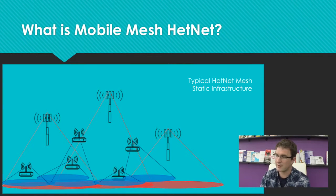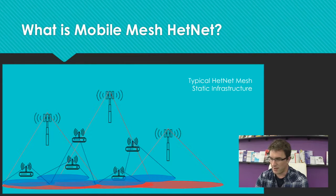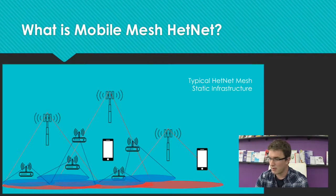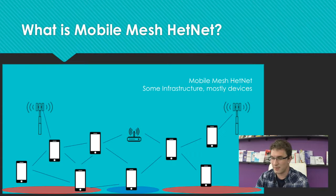A mobile mesh hetnet is a little bit different. We can still use this infrastructure when we need to, but instead of always relying on it, we now have the ability to route packets through devices — through cell phones, through laptops — that are also playing a part in the network. Nodes that are physically close to each other can avoid costly internet connections, the coverage of the infrastructure is greatly expanded, and it can also operate where infrastructure is sparse or non-existent.